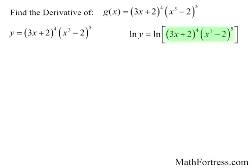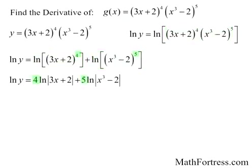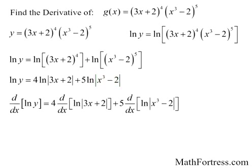Here we have a product of two different functions, so we apply the product-to-sum rule to rewrite the expression as a sum of logarithms. We then bring down the exponents in each term. Since the function 3x plus 2 attains negative values at given x values, we need to take the absolute value. Likewise, x cubed minus 2 also attains negative values, so we take the natural logarithm of its absolute value as well.